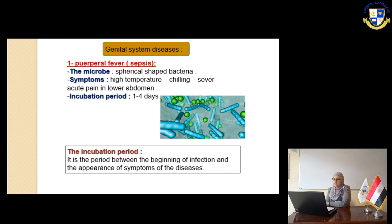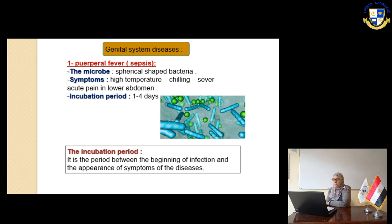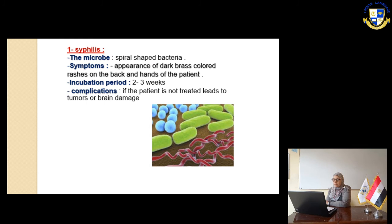Genital system diseases. Slide number 14: Gonorrhea — caused by spherical-shaped bacteria. Symptoms include high temperature and severe acute pain in the lower region. The incubation period is one to four days. The incubation period is defined as the period between the beginning of the infection and the appearance of the symptoms. Slide number 15: Syphilis — caused by spiral-shaped bacteria. Symptoms include dark-colored rashes on the back and head of the patient. The incubation period is two to three weeks. If not treated, it can lead to tumors or brain damage.